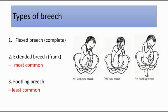The second one is extended or frank breech. This is the most common type of breech, where the hip is flexed but the knee is extended. It is also the least likely breech presentation to cause cord prolapse.